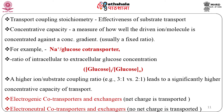Co-transporters and exchangers may be electrogenic or electroneutral. A transporter that leads to net translocation of charges across the membrane is said to be electrogenic. For example, with a coupling stoichiometry of 2 Na+ ions to 1 glucose molecule, the Na+/glucose co-transporter SGLT represents an electrogenic process. Such charge movement leads to a small electrical current, and therefore electrophysical methods may be used to measure the activity of electrogenic transporters. When no net charge is transported across the membrane per transport cycle, the process is said to be electroneutral.